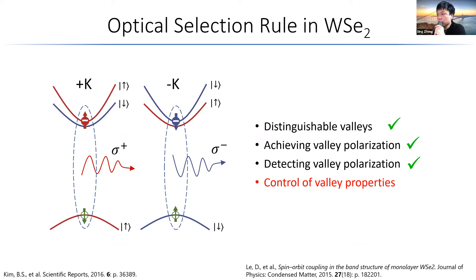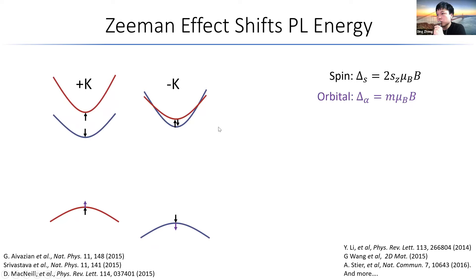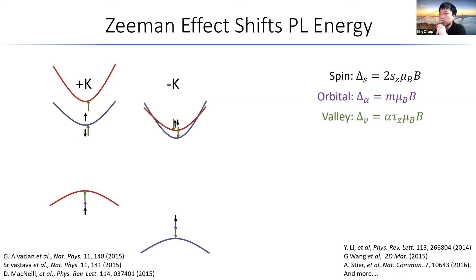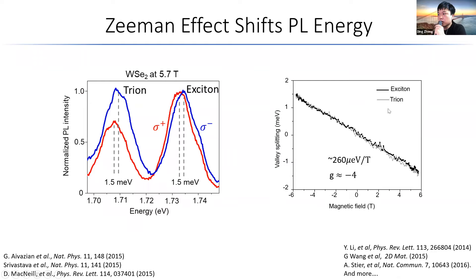So now we've covered how we have distinguishable valleys and can achieve valley polarization. We can detect valley polarization, and now we're going to talk about control of valley properties. If we want to break the energy degeneracy between the two valleys, an immediate idea is using the magnetic field because we need to break time reversal symmetry. With the magnetic field, there are three effects: spin, orbital magnetic moment, and valley (coming from the Berry curvature). You can understand them as self-rotating electron wave packages, and all of them are linear in B.